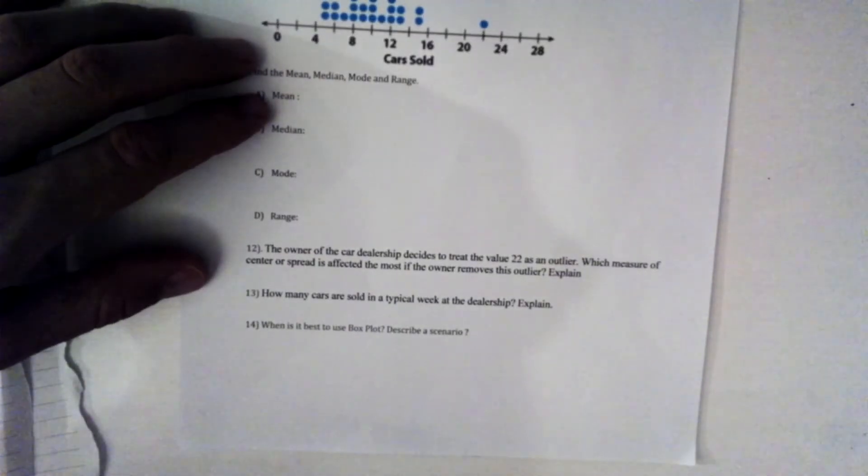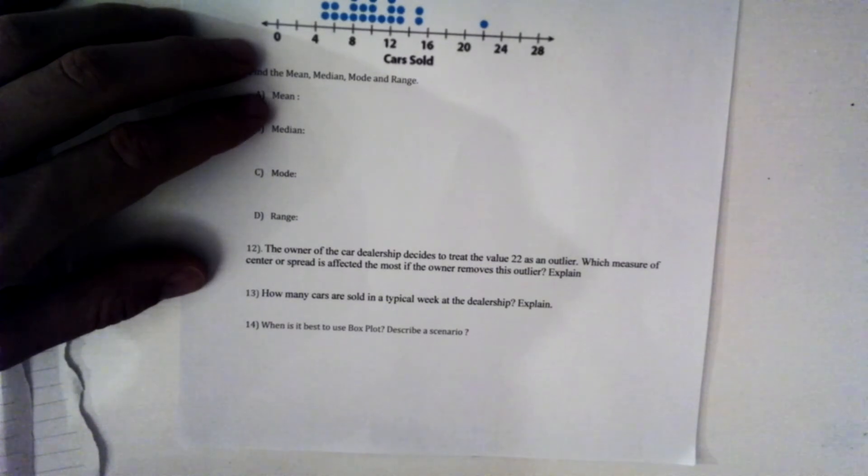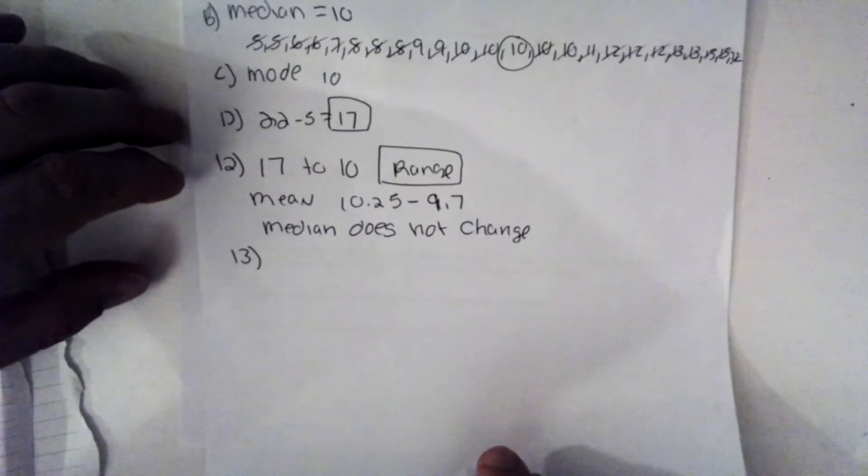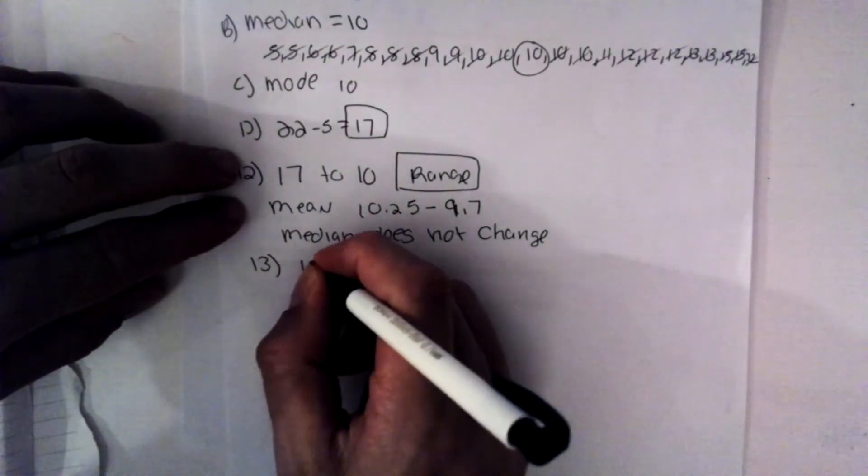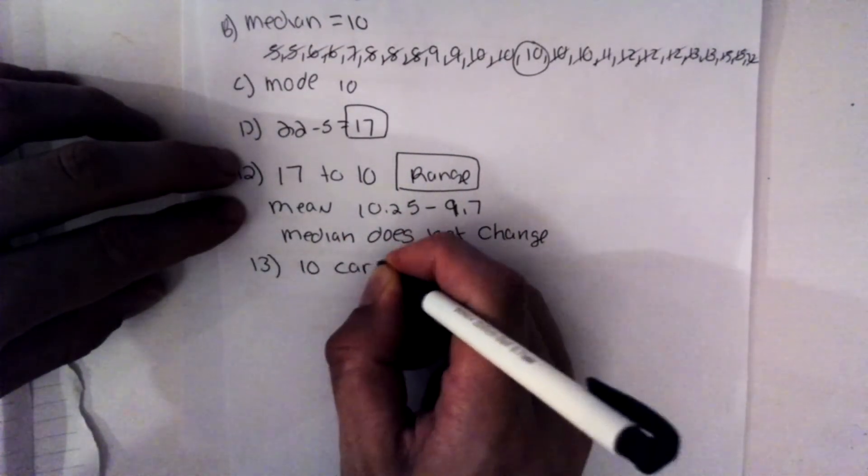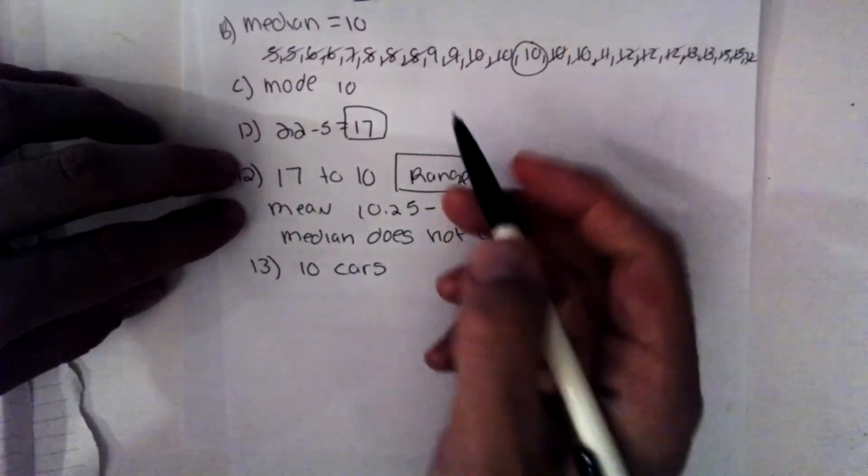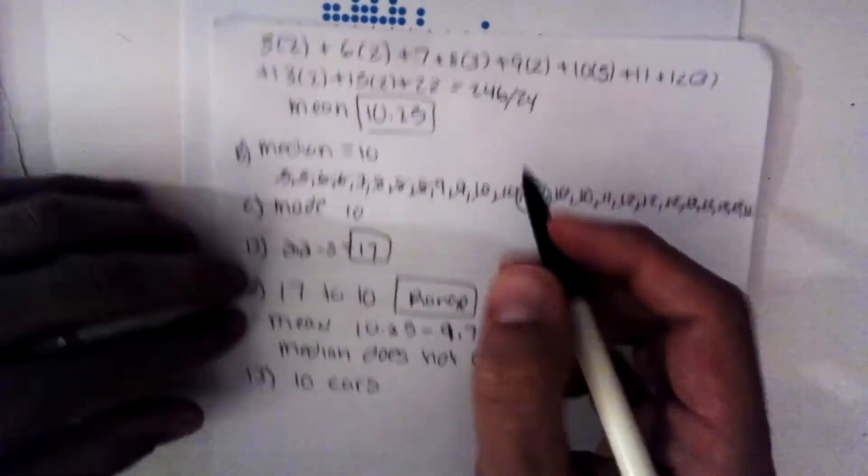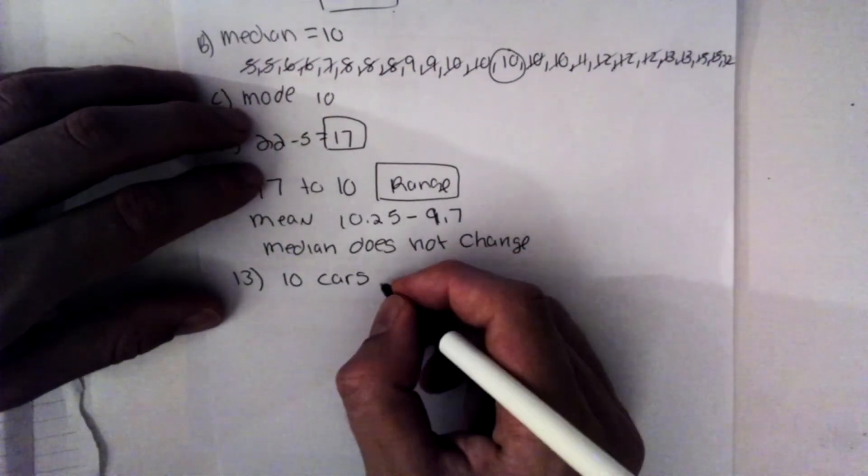So then the one that's affected the most is the range. 14 asks, how many cars are sold in a typical week at the car dealership? Well, there's about 10 cars since that's the average. 10 cars. And since you can't have a quarter of a car, we have to round to 10 cars.